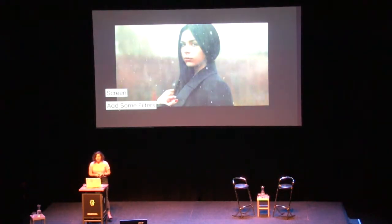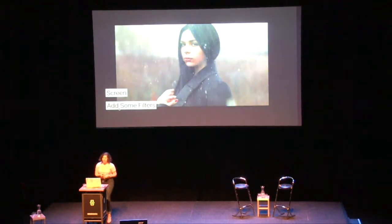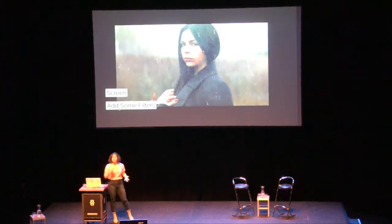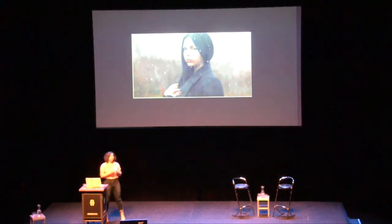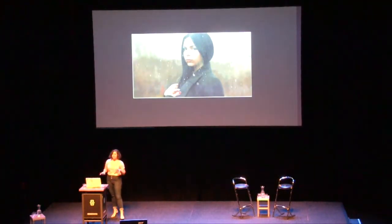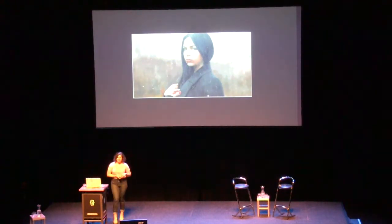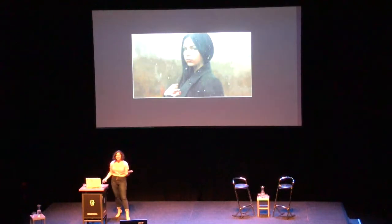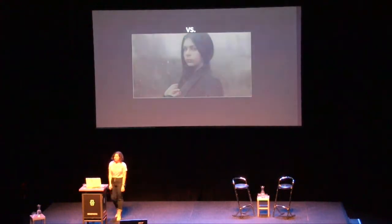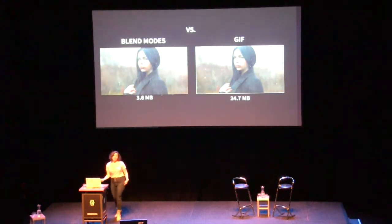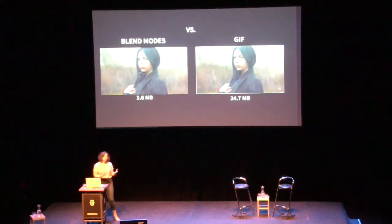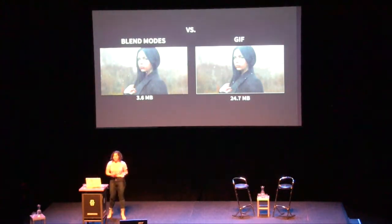This whole thing together is about 3.6 megabytes: the girl is 0.5 megabytes and the video is 3.1 megabytes — it's an MOV, and MP4s are even more performant. If we compare that to a GIF, not only is it way more choppy but the size is 24.7 megabytes for something equivalent to that video we just made in the browser. So: 3.6 megabytes versus 24.7 megabytes, plus you get such a smooth interaction in the first example versus the second one.